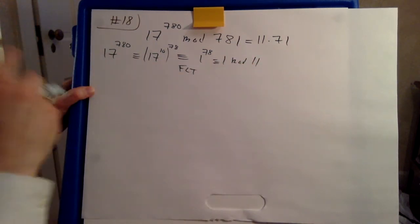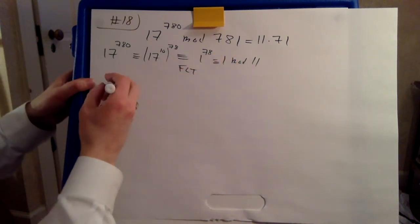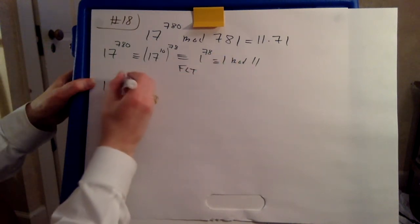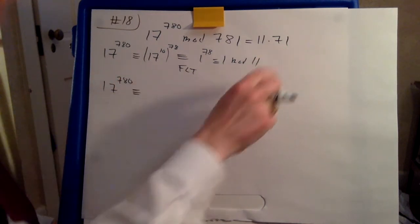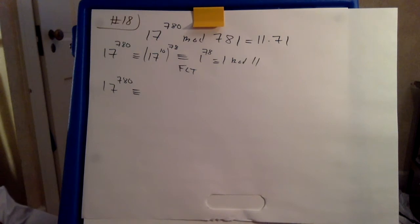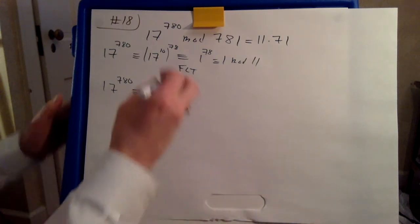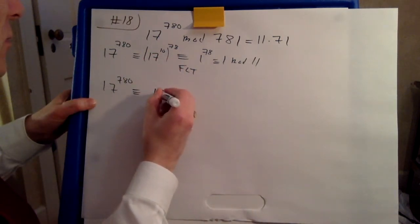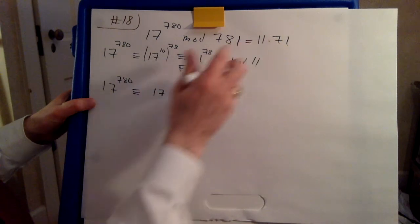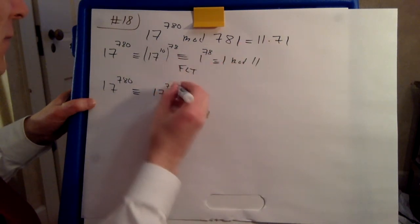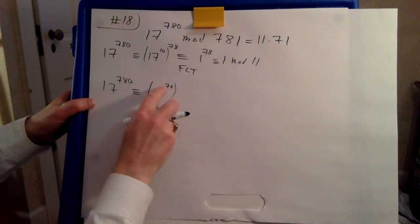Now we have to look at 17 to 780 and we now have to calculate mod 71. Okay, hold your horses. Here we go. So we're again going to use Fermat's Little Theorem. So we're going to write that as 17 to the power of 70. How many times can 70 go in here? It's 11 times.